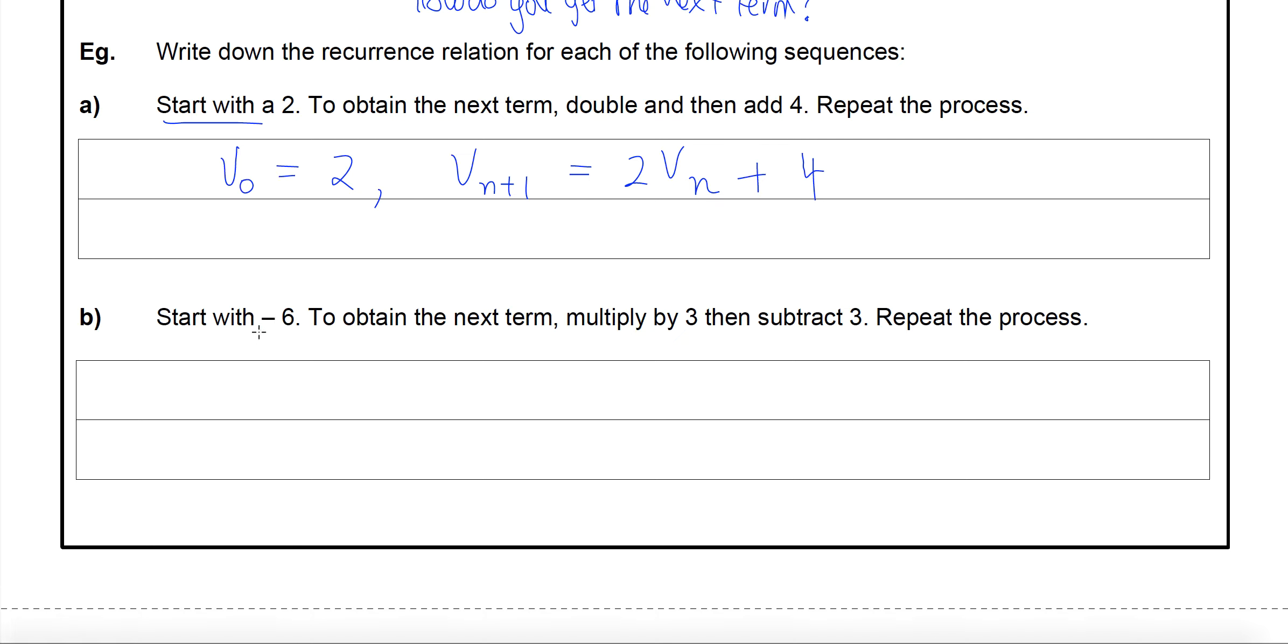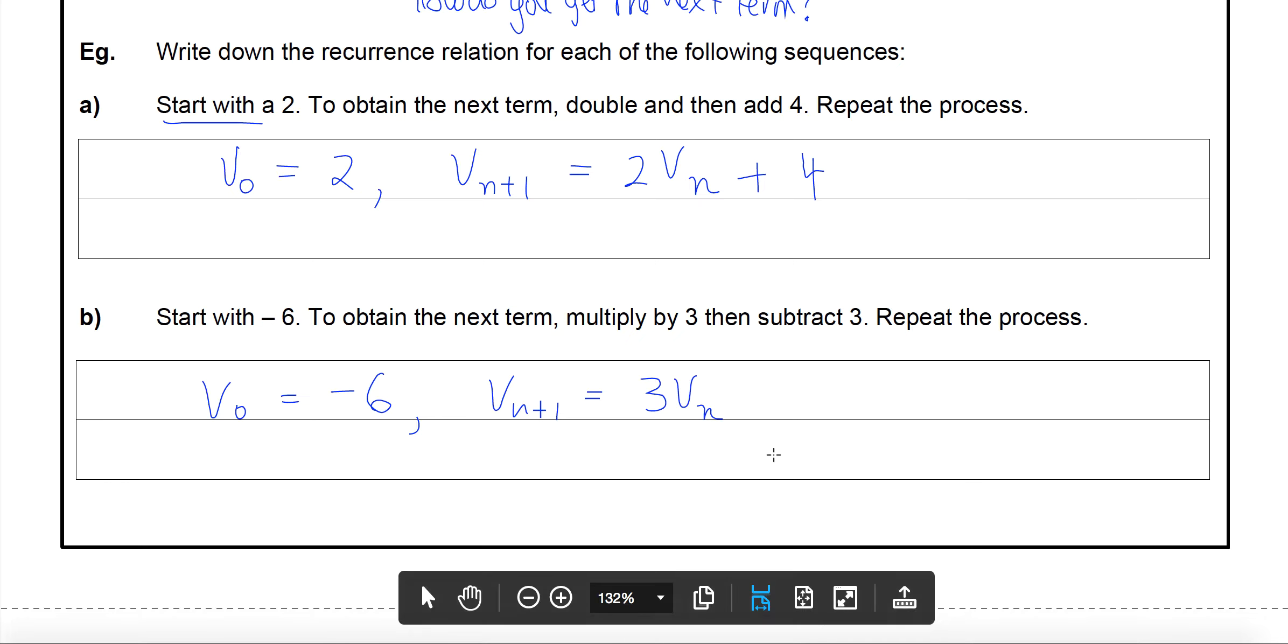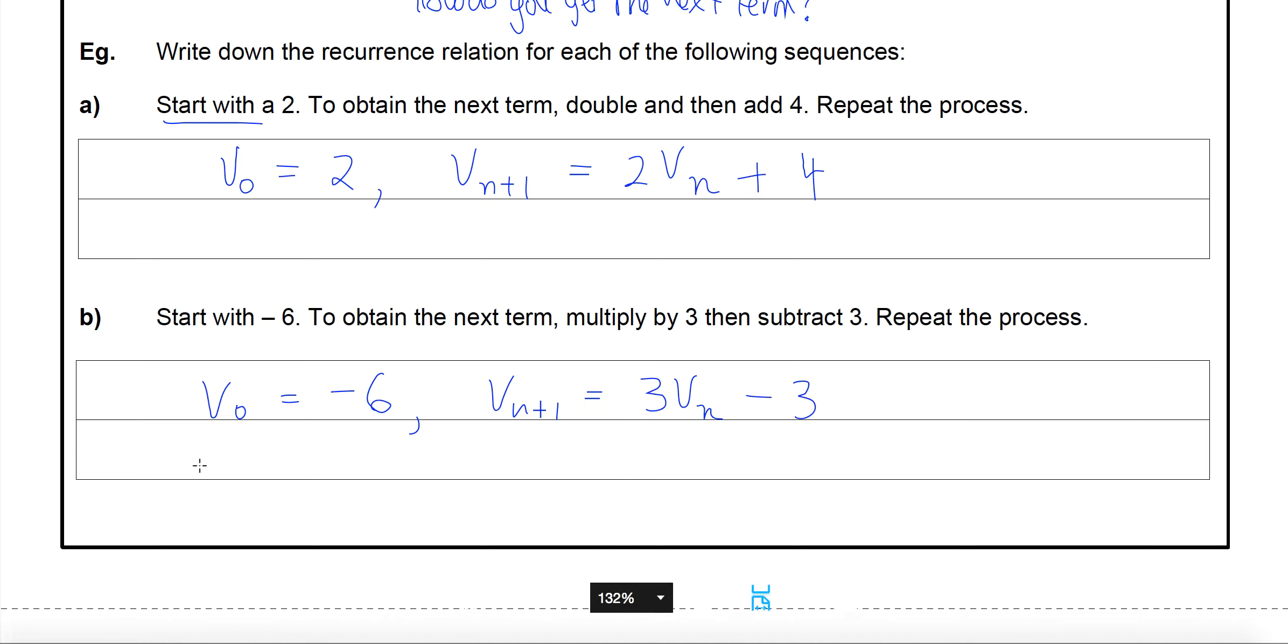Notice we're not actually generating the terms yet. We're just writing the rule for how to get those terms. Next one is start with negative 6. So V_0 is negative 6, comma, to get the next term. So the very next term equals multiply by 3. So 3 times the term that comes before it and then subtract 3. Repeat just meaning that we are using recursion and that's what a recurrence relation indicates.